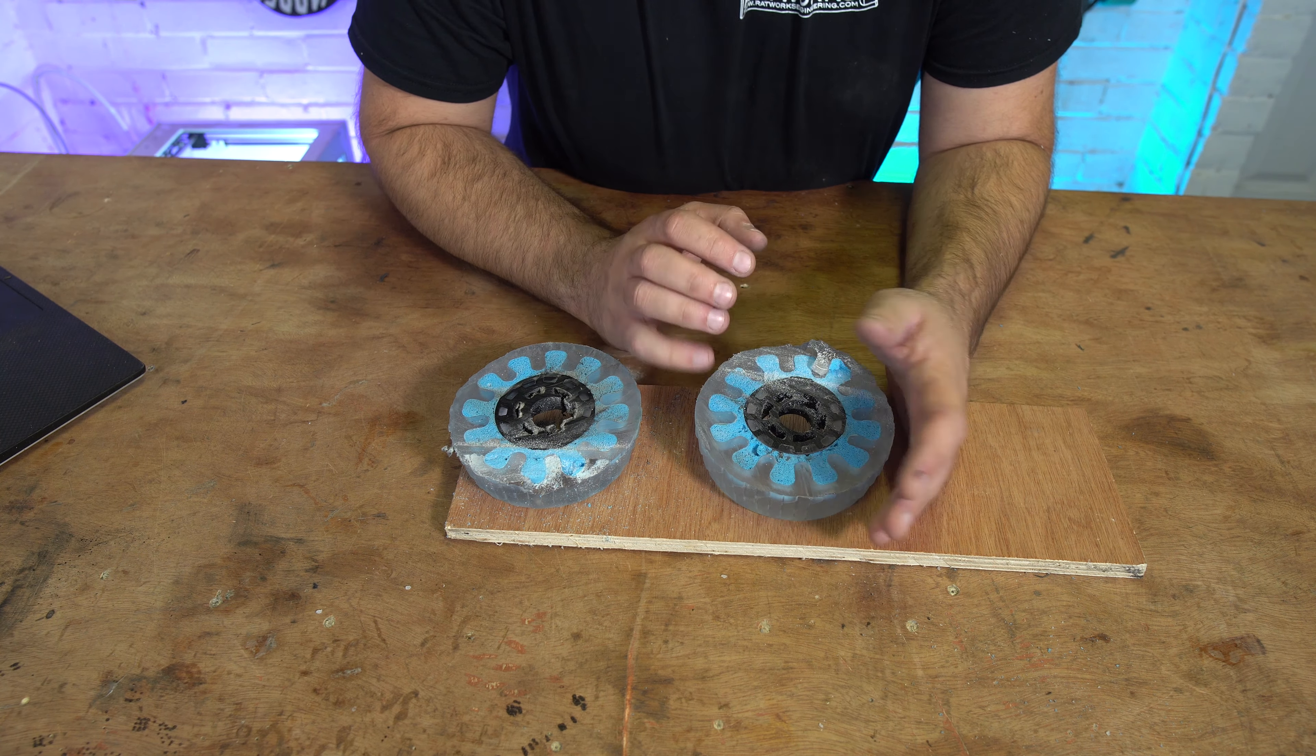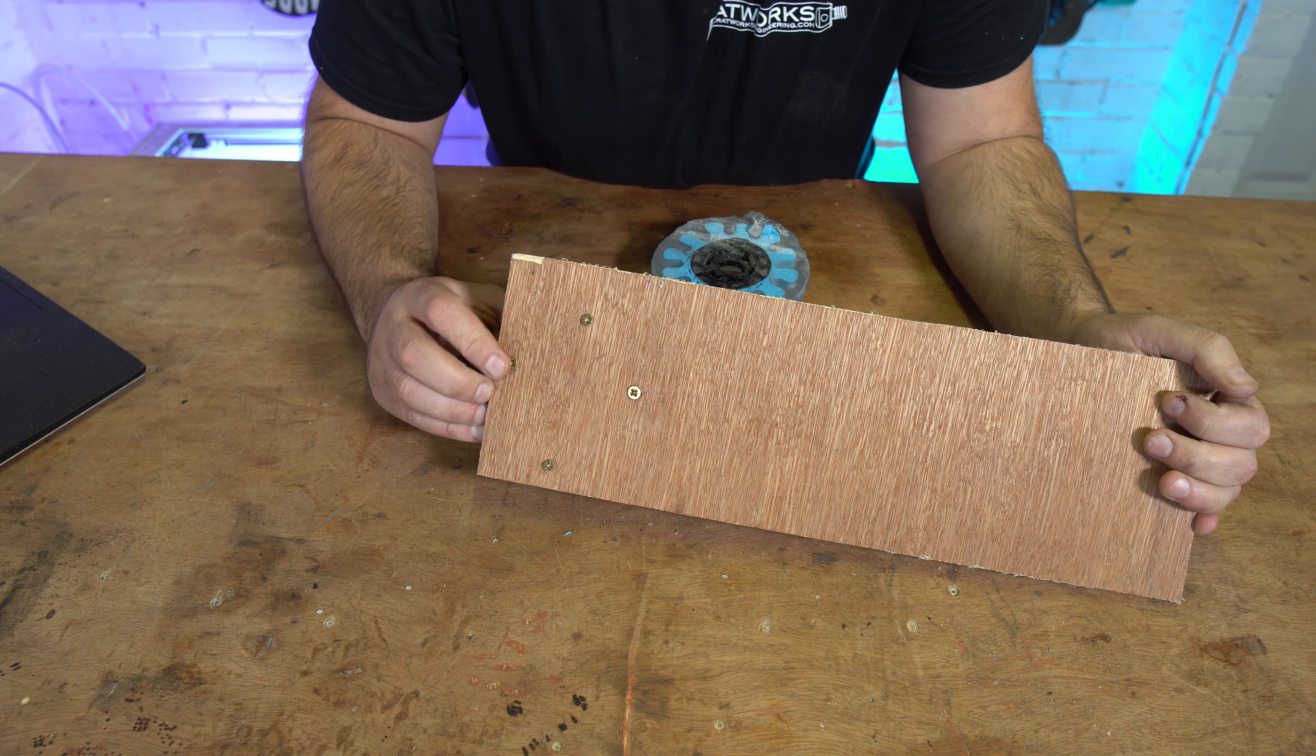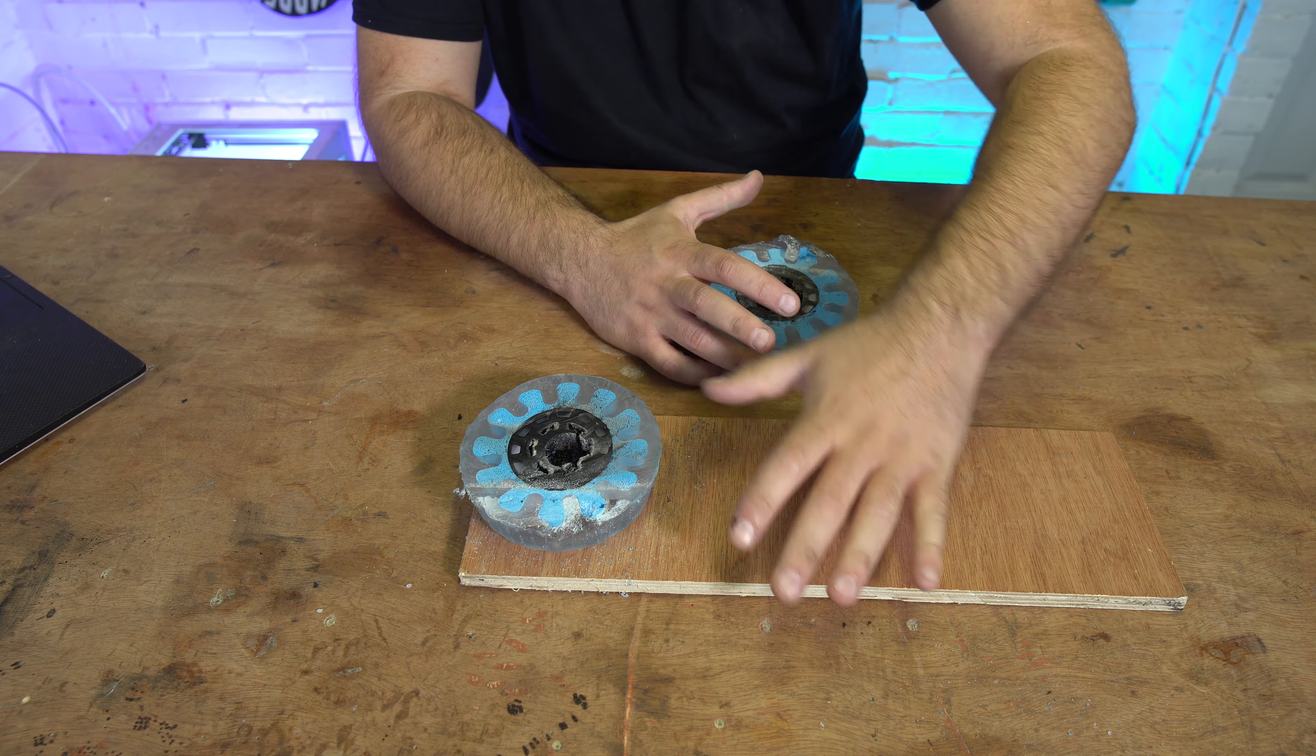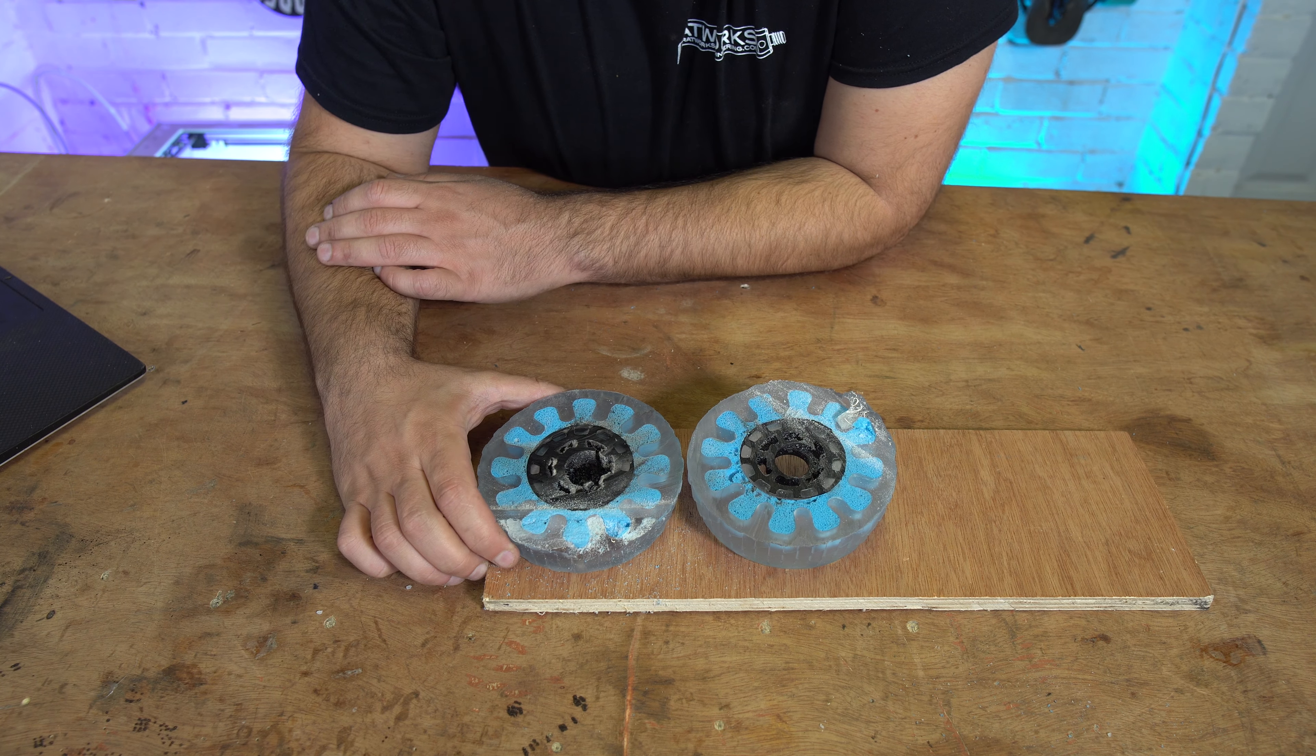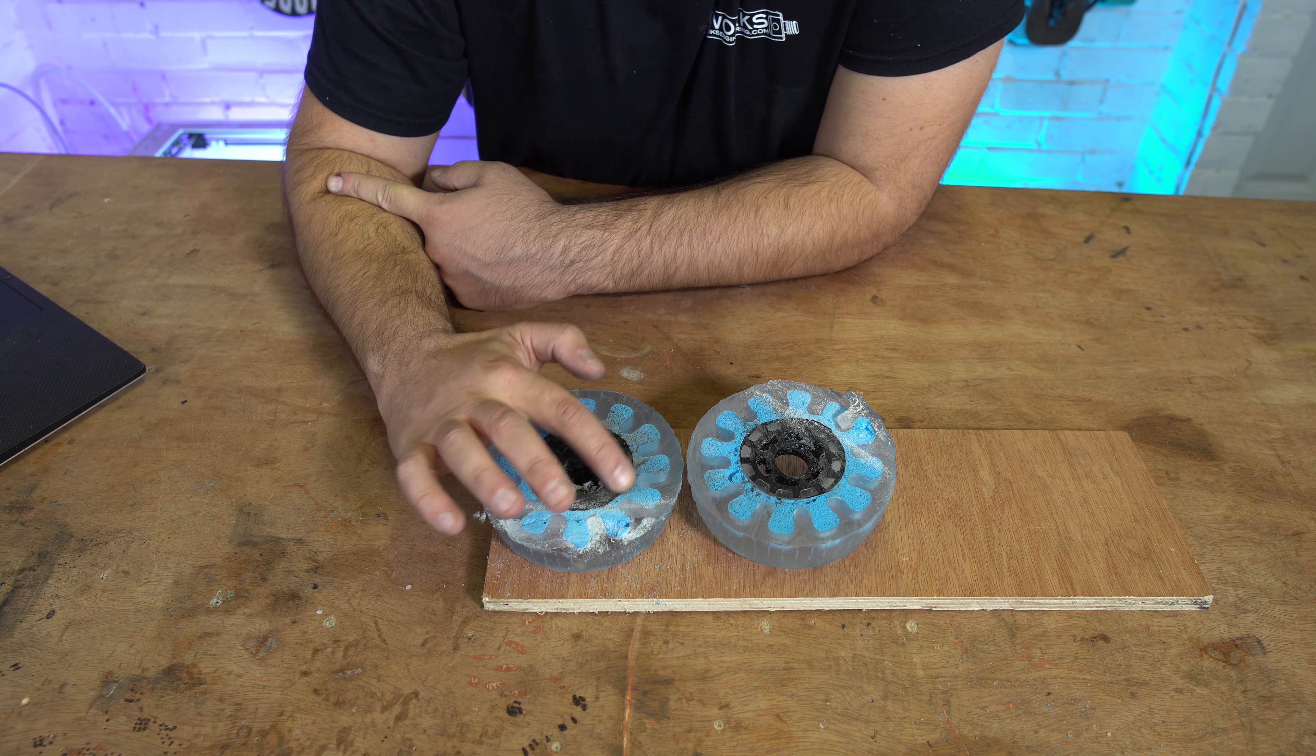So then guys, here we go. Managed to get it chopped in half, as you saw in the little bit of b-roll. I screwed the wheel to this piece of wood just to make it a bit easier to handle. Even with my recently broken hand it's quite difficult to grab that. But yeah, this is what they look like on the inside.